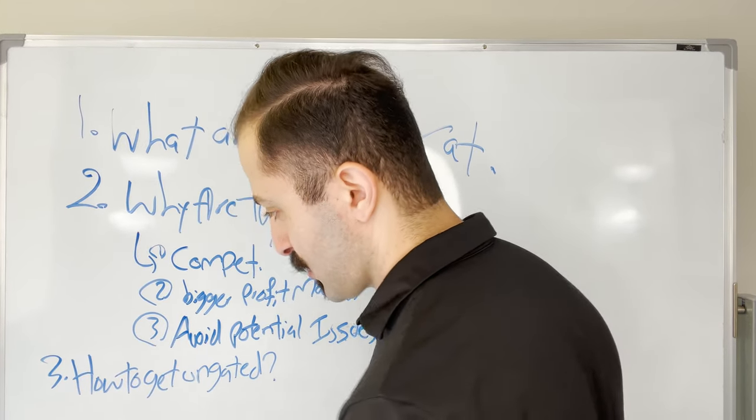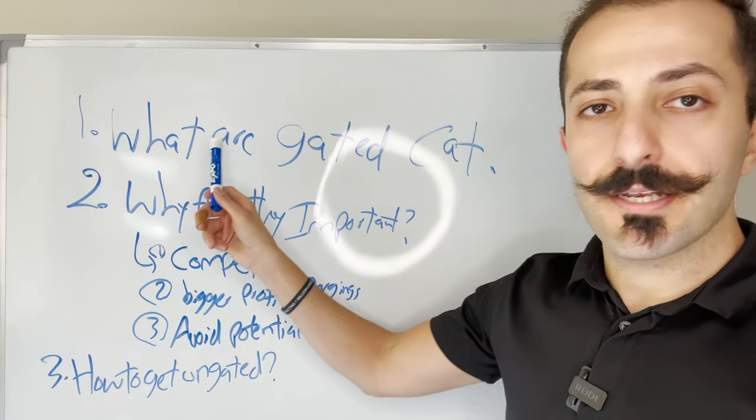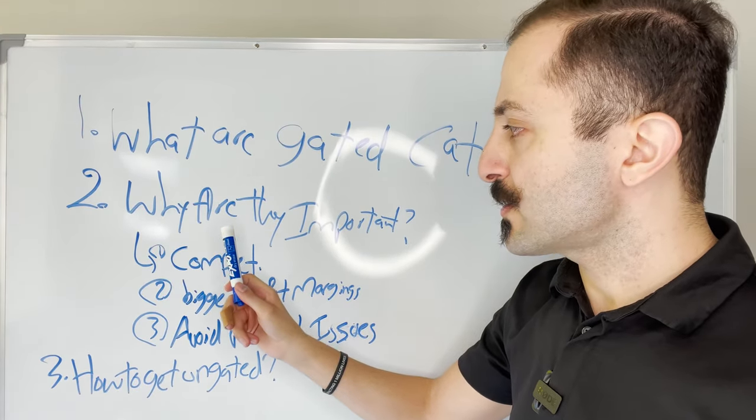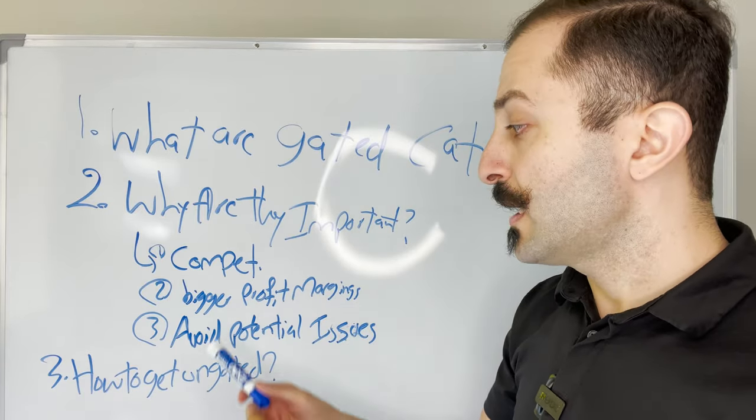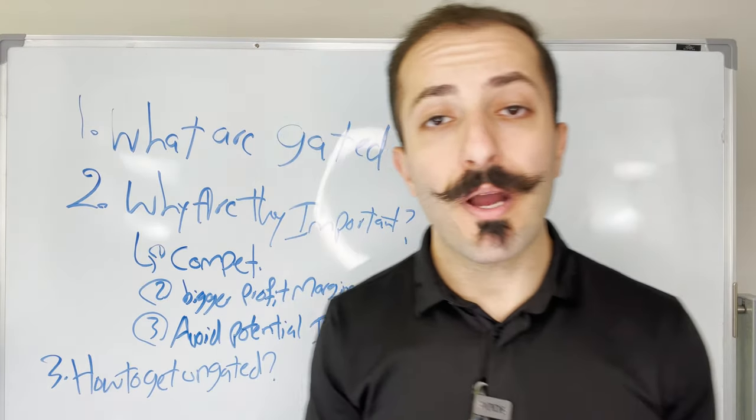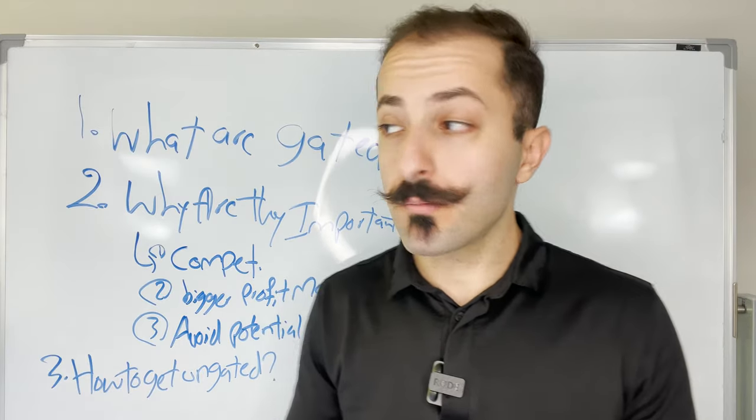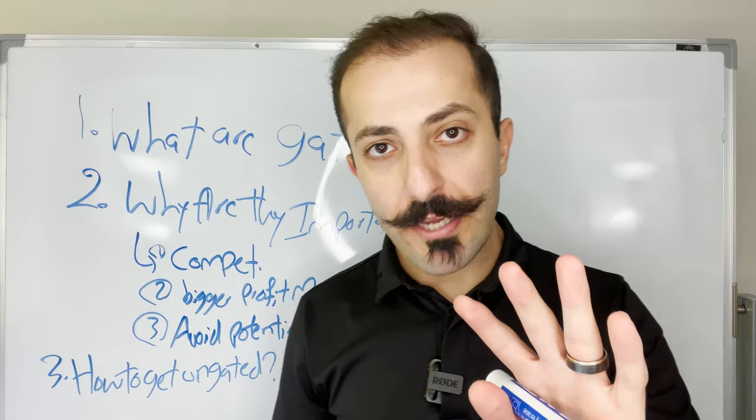I understand now what gated categories are. Number two, I understand why they are important, but now I want to know how do I get ungated in those gated categories where there is more potential. Before I go into that, however,